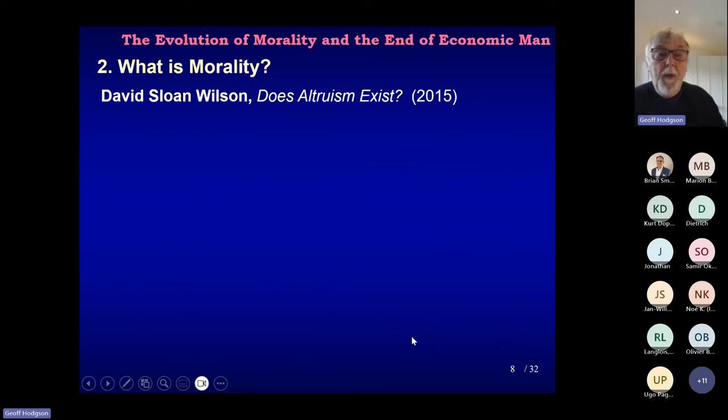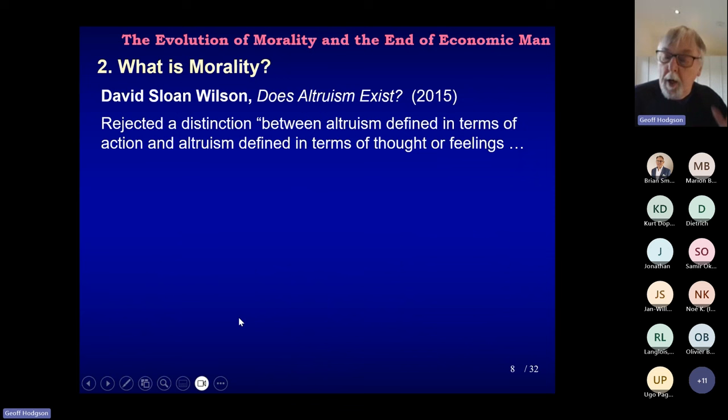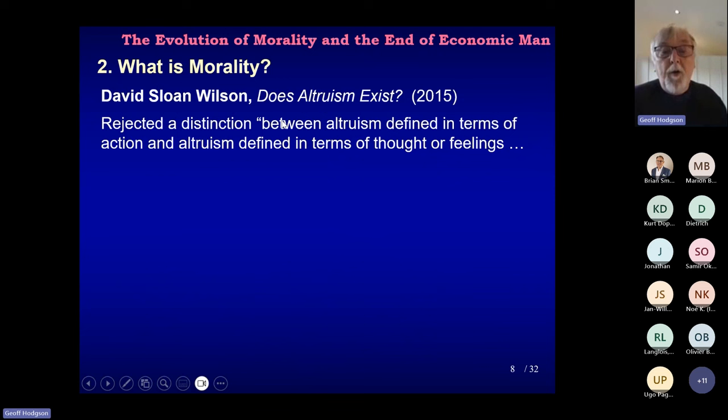So that would be part of my criticism of Sam Bowles' book. I don't think it's adequate to talk about what he calls the moral economy — a very important issue — in utilitarian or MaxU terms alone. It's focusing too exclusively on consequences. I've also read a very interesting book called Does Altruism Exist? — a lot of things I agree about in this book, but I disagree with one part. David makes a distinction between altruism defined in terms of action and altruism defined in terms of thoughts or feelings.